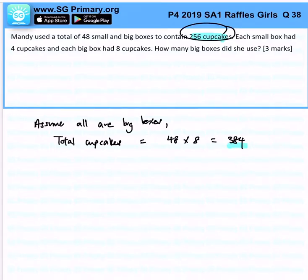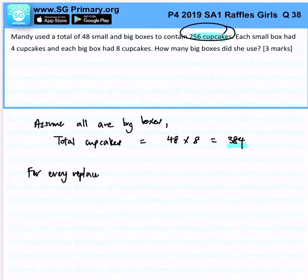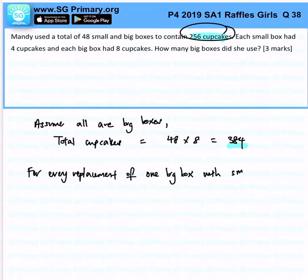So what happened? That is because there are small boxes available. So for every replacement of one big box with a small box, the total cupcakes will reduce by 4.